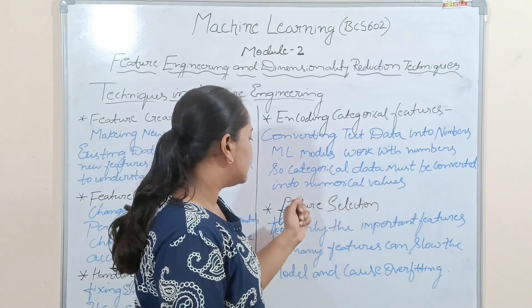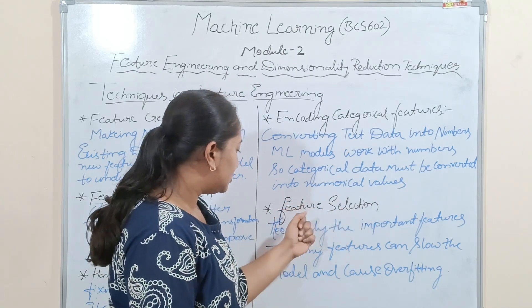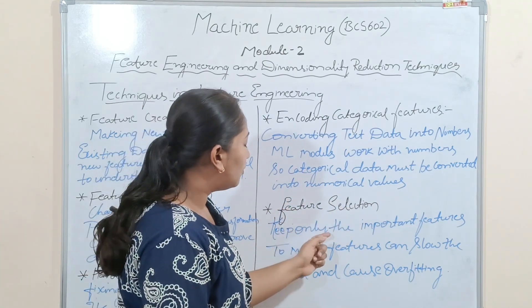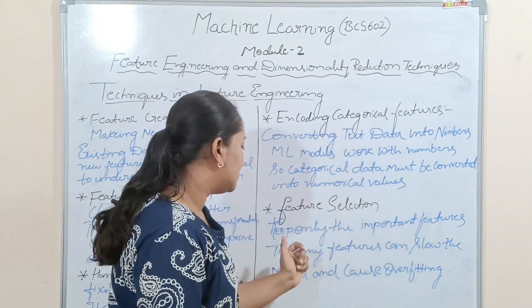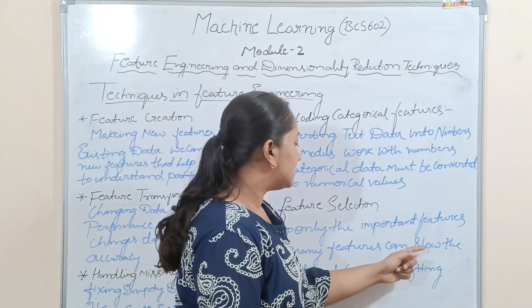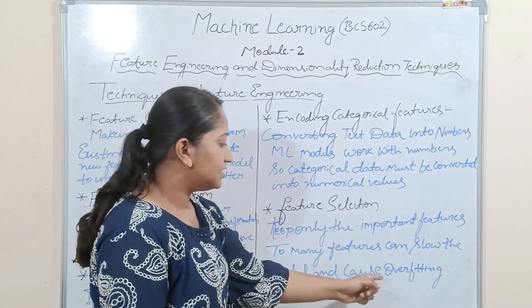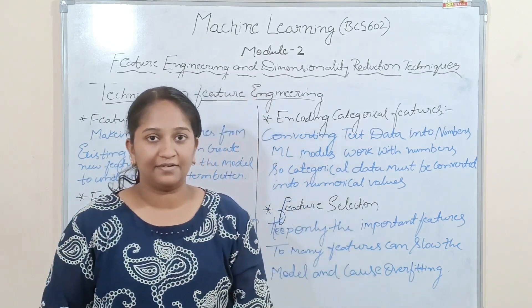Feature selection — keep only the important features. Too many features can slow down the model and cause overfitting.